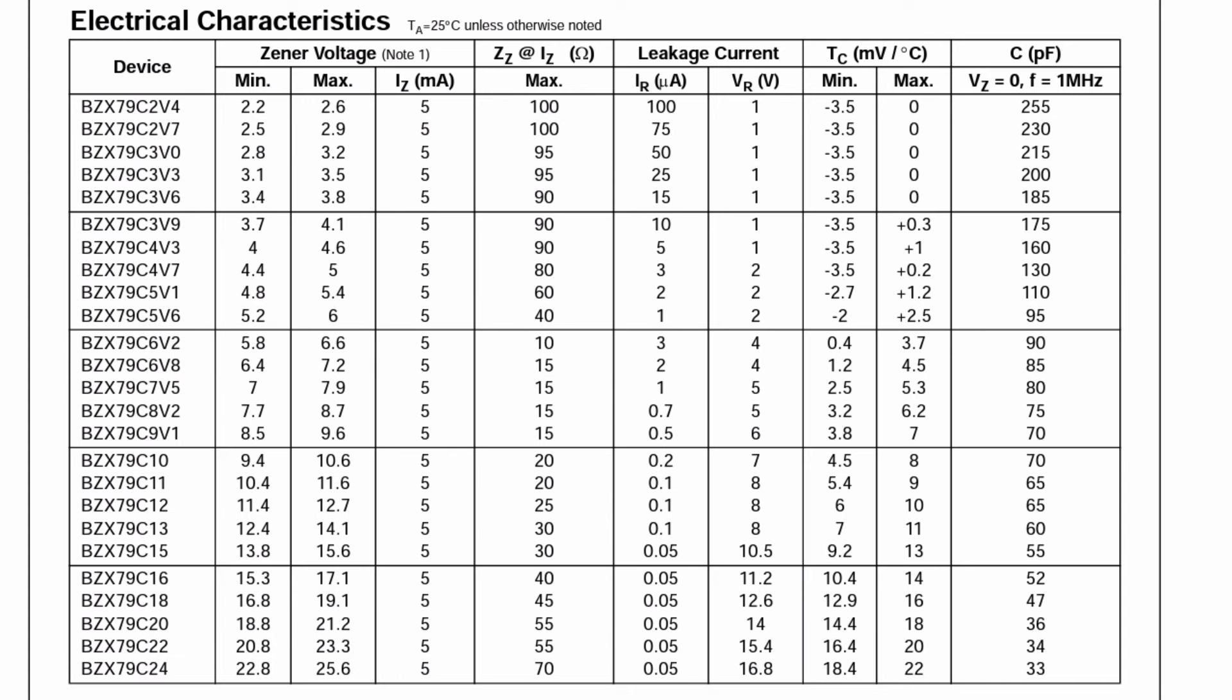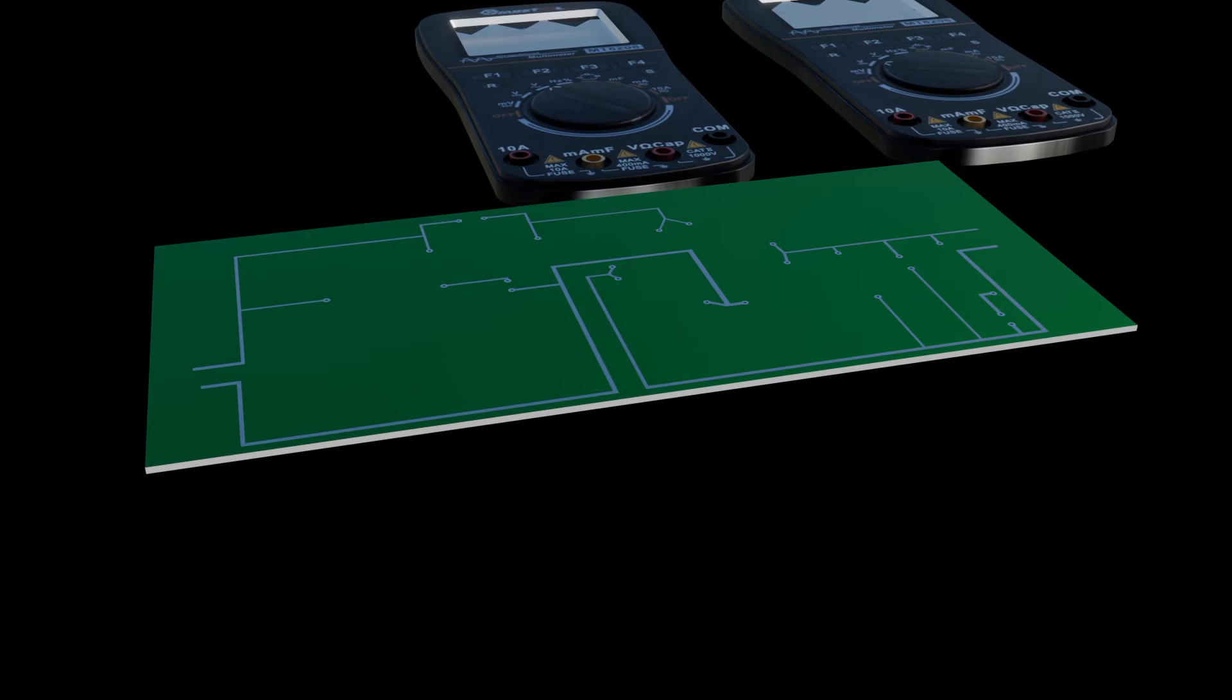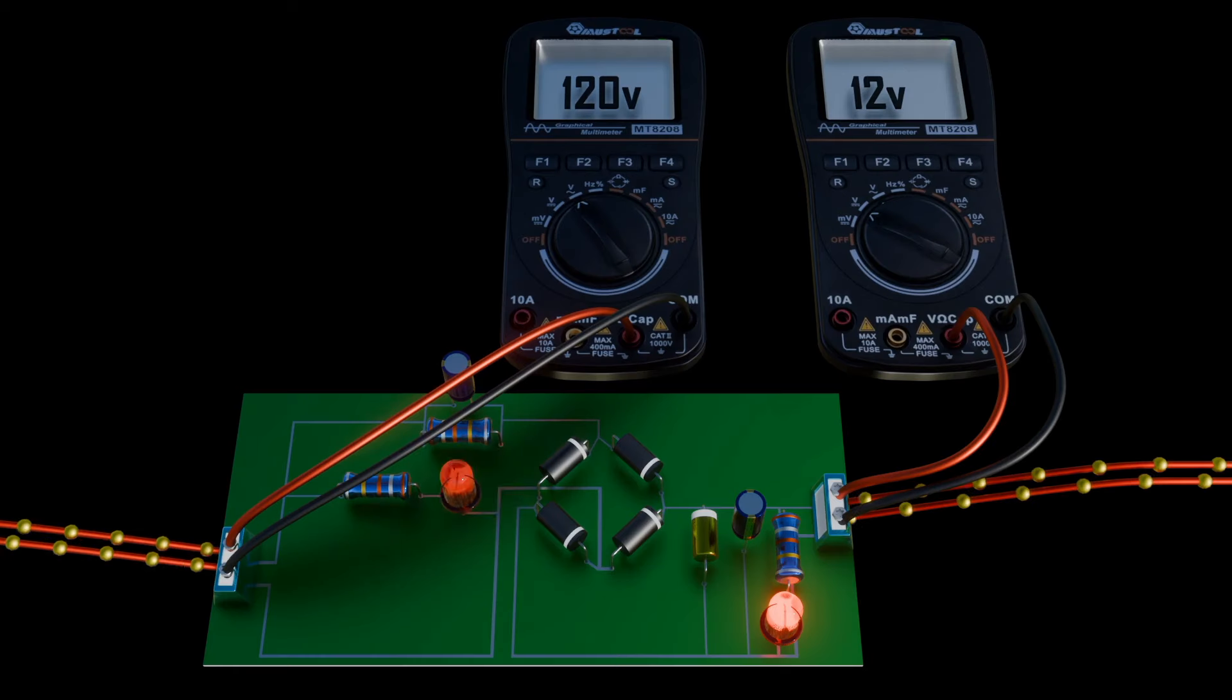Application areas of the Zener diode include voltage regulator. Here, the Zener diode is connected parallel to the load to make it reverse biased. And once the Zener diode exceeds knee voltage, the voltage across the load will become constant. Zener diodes can also be used for over-voltage protection and clipping circuits.